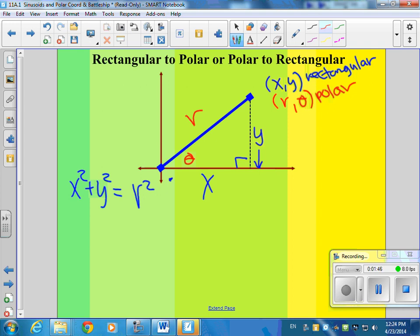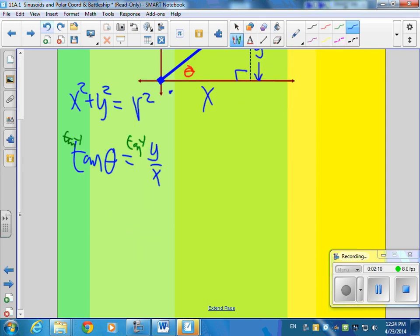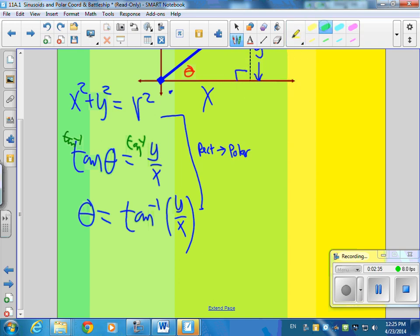What relationship is there between theta, x, and y? Tangent. So the tangent of theta is equal to y over x. If you're solving for theta, you can take the inverse tangent of both sides, and you're going to get theta equals the inverse tangent of y over x. So those are two formulas that we're going to use to convert rectangular to polar. Because we're trying to find r and we're trying to find theta.